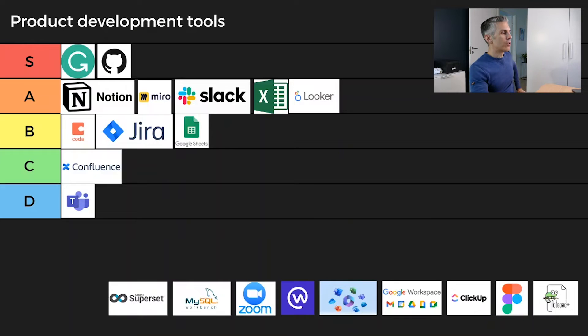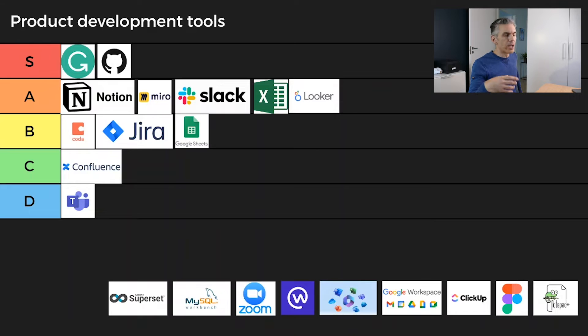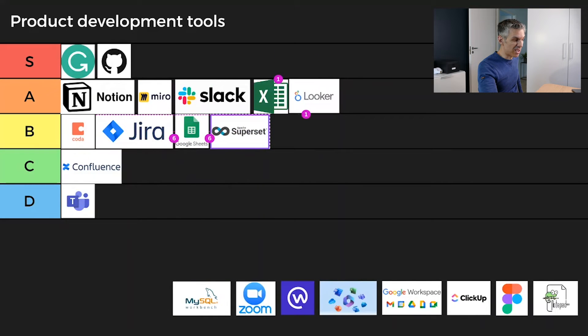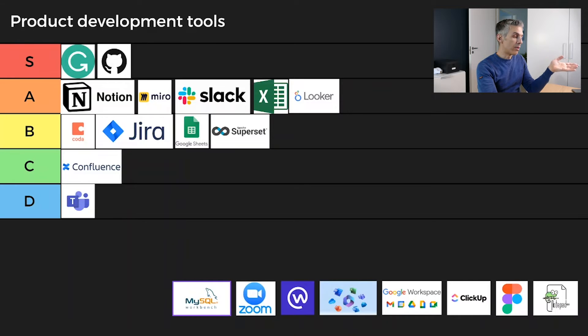The next one is Superset — you've probably never heard of it. It's not a very common tool; I think it was developed internally at Airbnb for data exploration and visualization. It's certainly not easy to use, but it's very powerful. It has a learning curve, so it's not going to be easy to start with. If you haven't used something like Looker or Google Data Studio yet, I'd recommend starting there. Superset is powerful, and there are similar tools like Tableau and Power BI.